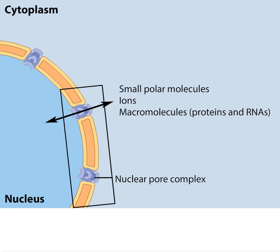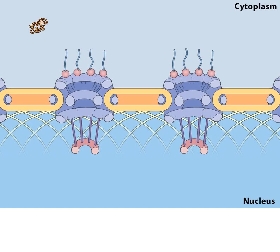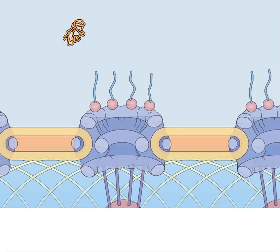Most proteins and RNAs are too large to move through the complex by passive diffusion and must move by an active process in which appropriate proteins and RNAs are recognized and selectively transported in a specific direction.